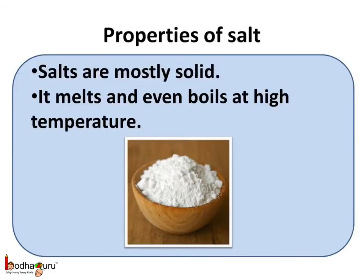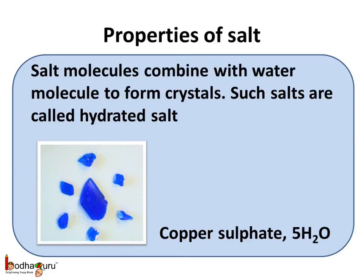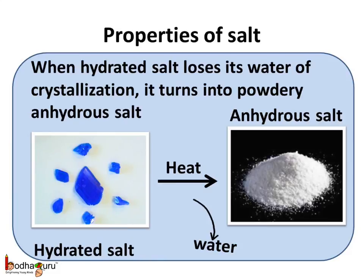What are the properties of a salt? Salts are mostly solid. A salt melts when heated and even boils at high temperatures. Salt molecules combine with water molecules to form crystals — such salts are called hydrated salts. For example, copper sulphate combines with five water molecules to form beautiful blue crystals. On heating, hydrated salt loses its water molecules and turns into a white powdery substance called anhydrous salt.